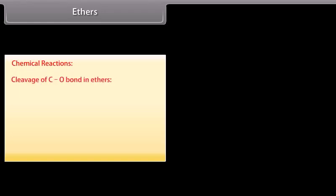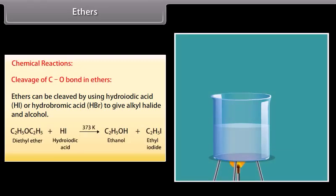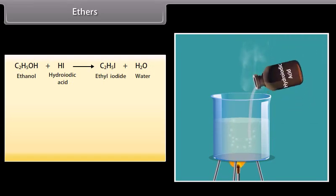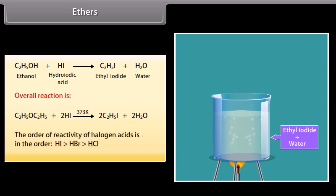Chemical reactions — cleavage of CO bond in ethers: ethers can be cleaved by using hydroiodic acid or hydrobromic acid to give alkyl halide and alcohol. Hydroiodic acid reacts with diethyl ether and it forms ethanol and ethyl iodide. With excess of hydroiodic acid, the alcohol formed further reacts to form ethyl iodide. The overall reaction is: hydroiodic acid reacts with diethyl ether at 373 K to form ethyl iodide and water. The order of reactivity of halogen acids is: HI > HBr > HCl.